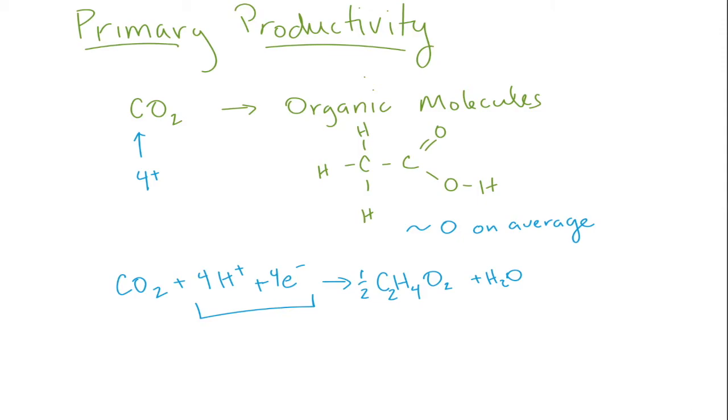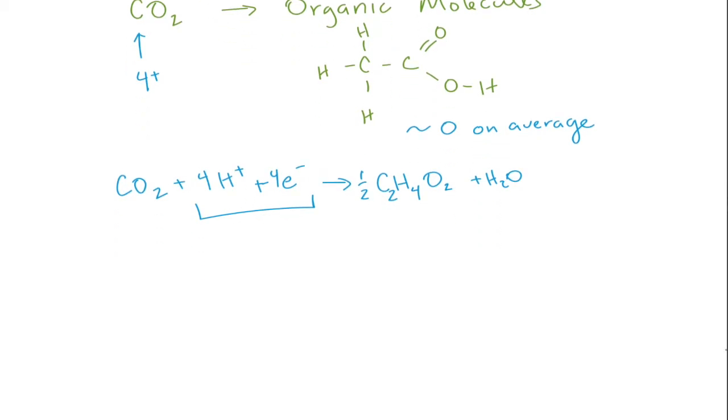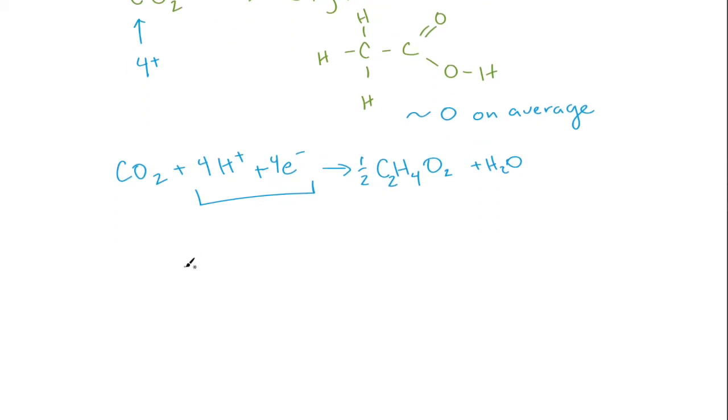The organism has to get those protons and electrons in some way. The most common way on Earth for these to be produced is through photosynthesis. We have oxygenic photosynthesis.